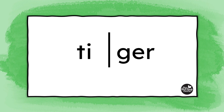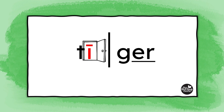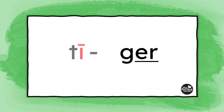Now that we have it divided, look at each syllable. What do you see on the end of the first syllable? It's an I, but it's not closed in by a consonant, so it's going to be an open syllable — the I is going to say its name out the door. When they take a look at the second syllable, they should locate that ER chunk, and it should help them read ger. So now we have ti-ger. Tiger.